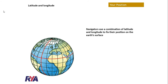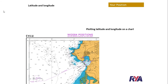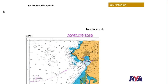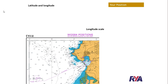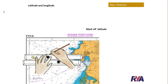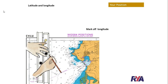Fixing our positions on the chart with this grid system: the latitude scale is the vertical scale on the chart, and the longitude scale is the horizontal scale on the top and bottom of the chart. To fix a position, we first mark off our latitude on the scale on the side of the chart, whichever side is closer, and then we mark off our longitude from either the top or the bottom of the chart, whichever is closer.